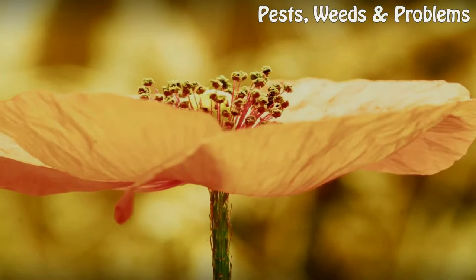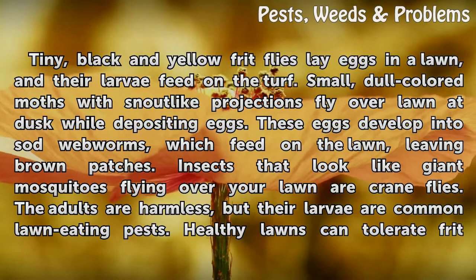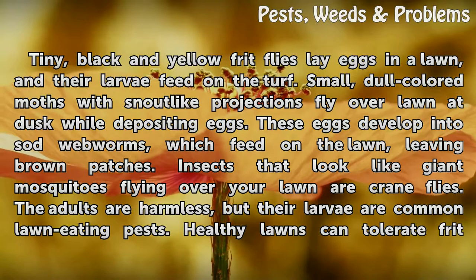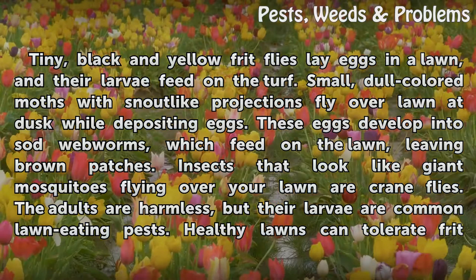Tiny black and yellow frit flies lay eggs in a lawn, and their larvae feed on the turf. Small, dull-colored moths with snout-like projections fly over lawns while depositing eggs. These eggs develop into sod webworms, which feed on the lawn, leaving brown patches.